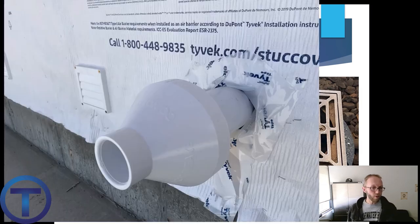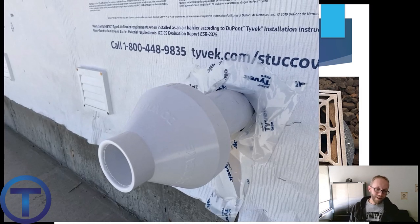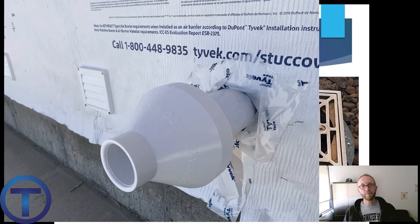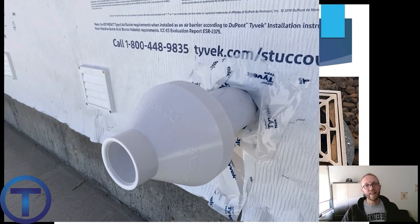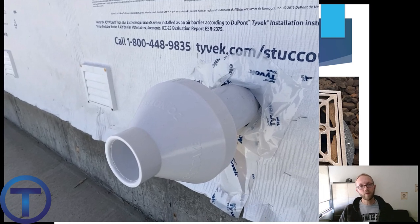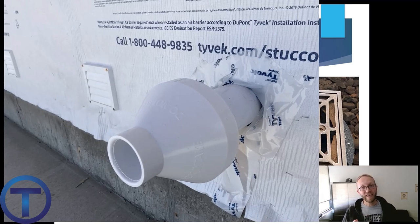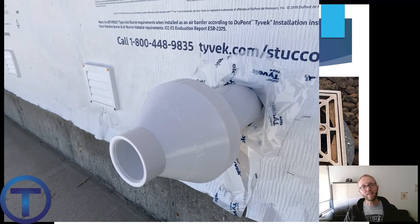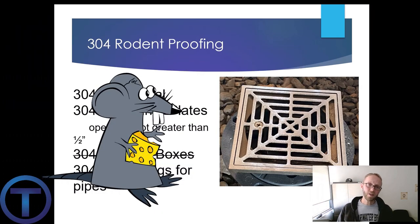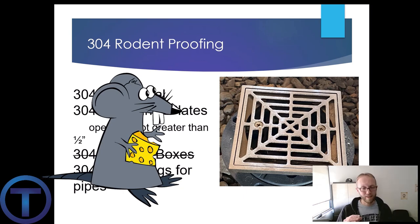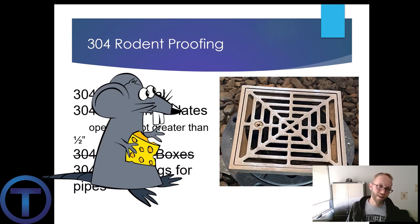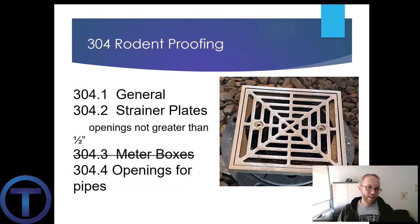304.4: Openings for pipes. All openings around pipes — say I bring a pipe into a building — those have to be sealed around the pipe so that rodents or other things can't get in and squeeze through. You have to understand that rodents like mice can basically compress their rib cage to a very narrow dimension and slide right through things you might not think they could make it through. That's why we have all of these protections against rodents.